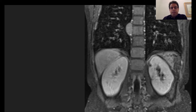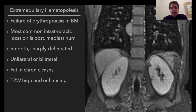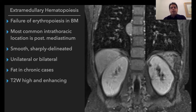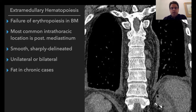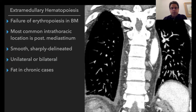On post-contrast MRI, there is significant enhancement within the mass. The location, smooth contour, and enhancement favor extramedullary hematopoiesis, which we see in patients with failure of erythropoiesis. History is very important in making this diagnosis. These lesions can be bilateral, as seen in this case with several significantly enhancing soft tissue lesions on the bilateral aspects of the vertebral bodies.